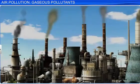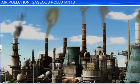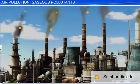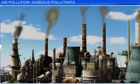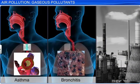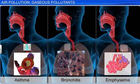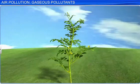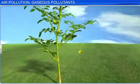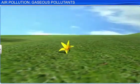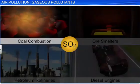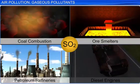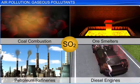Burning sulfur-containing fossil fuels produces the oxides of sulfur. The most common oxide among them is sulfur dioxide. This gas is poisonous for living organisms and causes respiratory diseases like asthma, bronchitis and emphysema in humans. In plants, a high concentration of sulfur dioxide makes the flower buds stiff and makes them fall off, hampering its reproductive cycle. Coal combustion, ore smelters, petroleum refineries and diesel engines are some sources of sulfur dioxide.